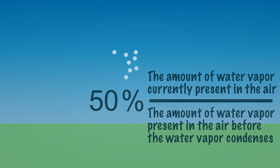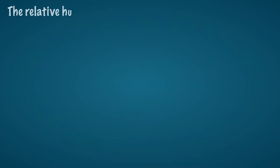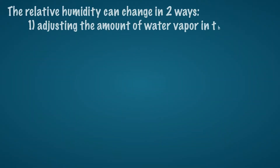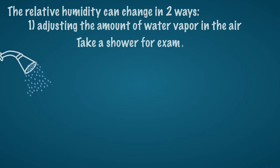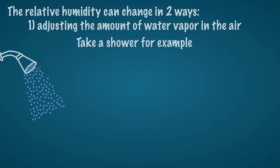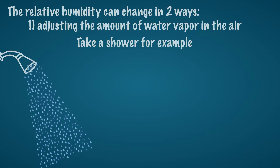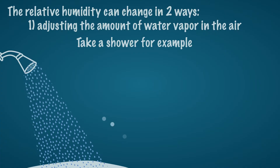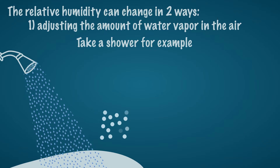The relative humidity can change in two ways. The first way is by adjusting the amount of water vapor in the air. When water evaporates, the amount of water vapor in the air increases and thus the relative humidity rises. For example, by taking a long and hot shower, water evaporates so that the relative humidity can rise sharply in the shower and some of the water vapor condenses.